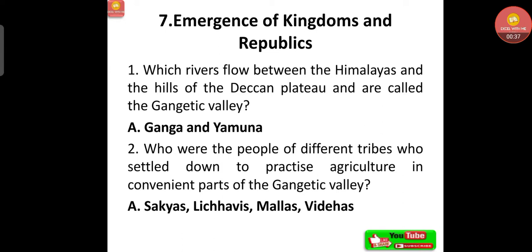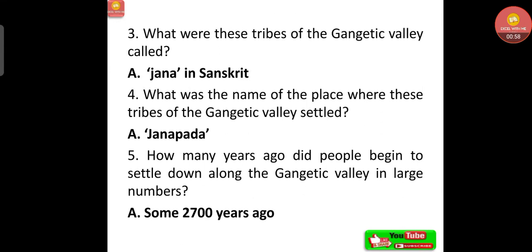The rivers are the Ganga and Yamuna. The people of different tribes who settled down to practice agriculture in convenient parts of the Gangetic Valley were the Sakyas, Lichavis, Mallas, and Videhas. These tribes of the Gangetic Valley were called Jana in Sanskrit, and the name of the place where they settled is called Janapada.